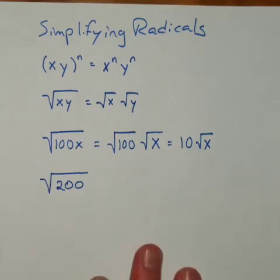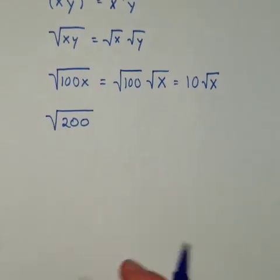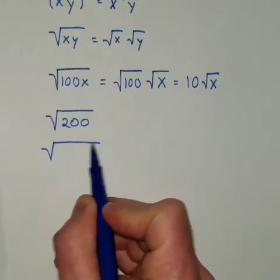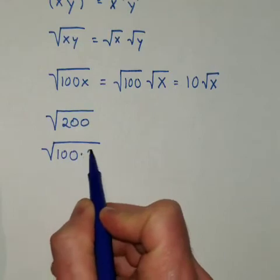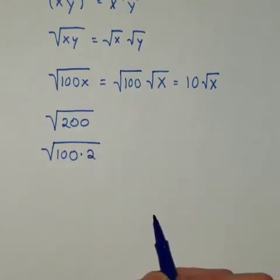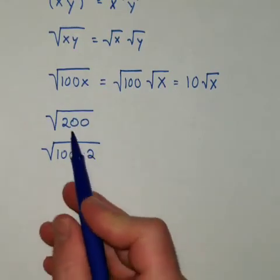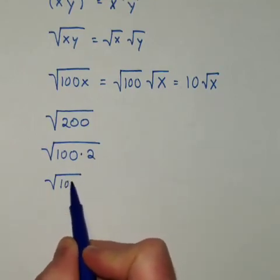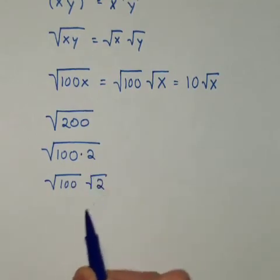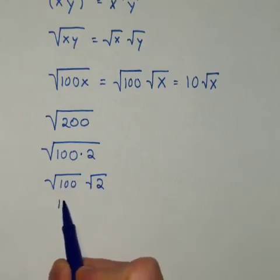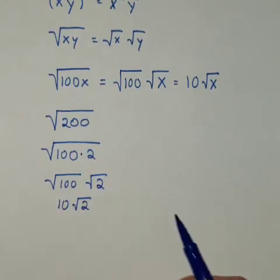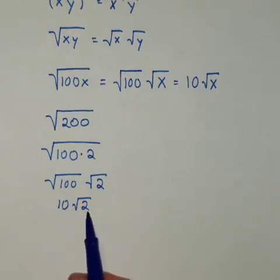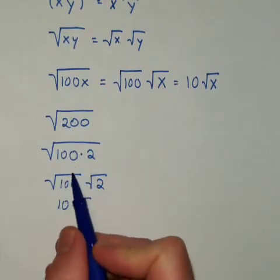I'm going to start working these vertically here. 200 can be written as 100 times 2. Then you can split that root between the 100 and the 2. The 100 simplifies to a 10, and the root 2 doesn't simplify. So 10 root 2 is the simplified form of the square root of 200.